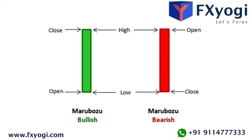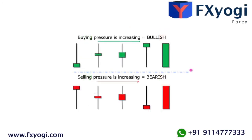If a doji forms after a series of candlesticks with long filled bodies like black marubozu, the doji signals that sellers are becoming exhausted and weak. In order for the price to continue falling, more sellers are needed, but sellers are all tapped out. Buyers are eager for a chance to get in cheap. While the decline is spluttering due to lack of new sellers, further buying strength is required to confirm any reversal.